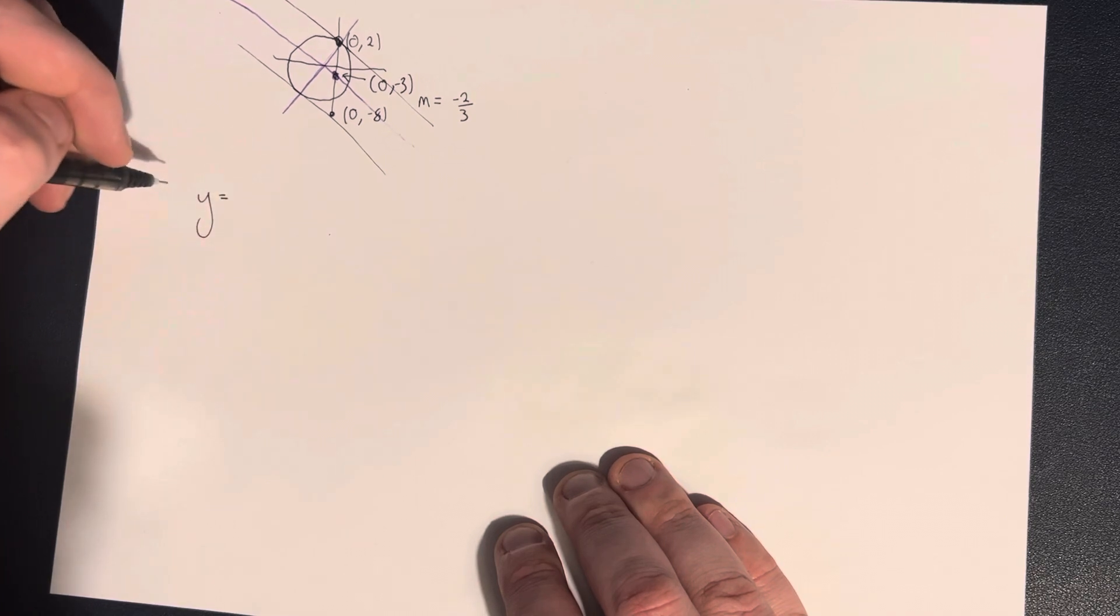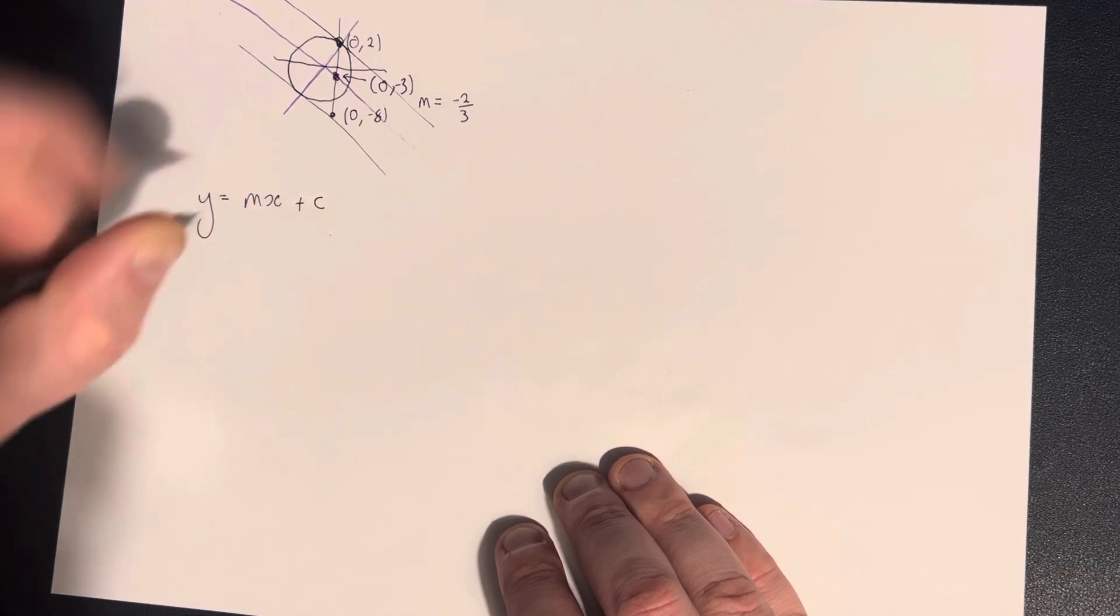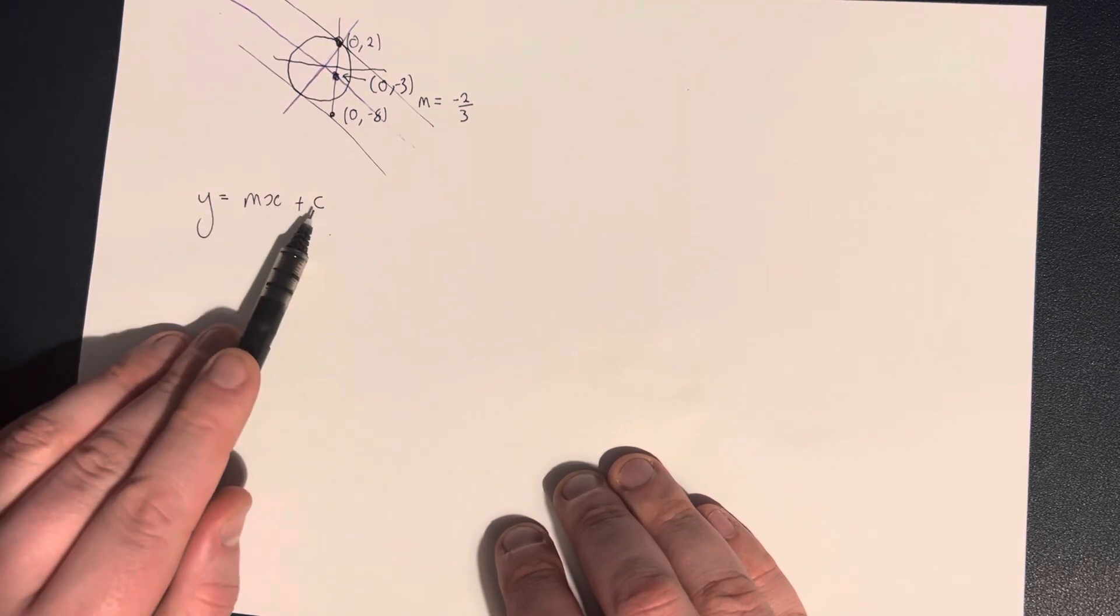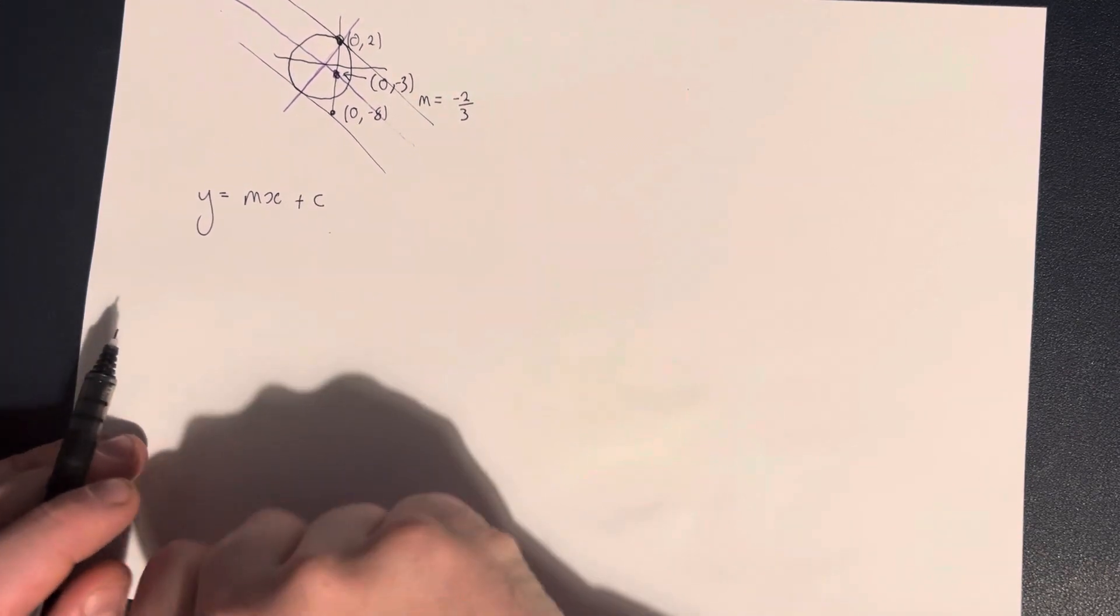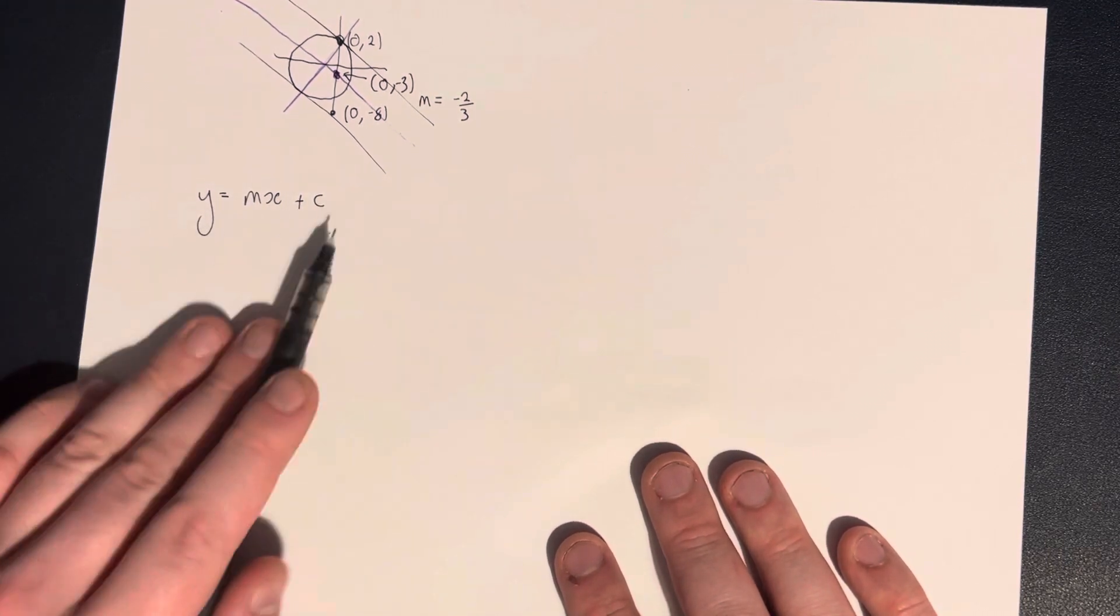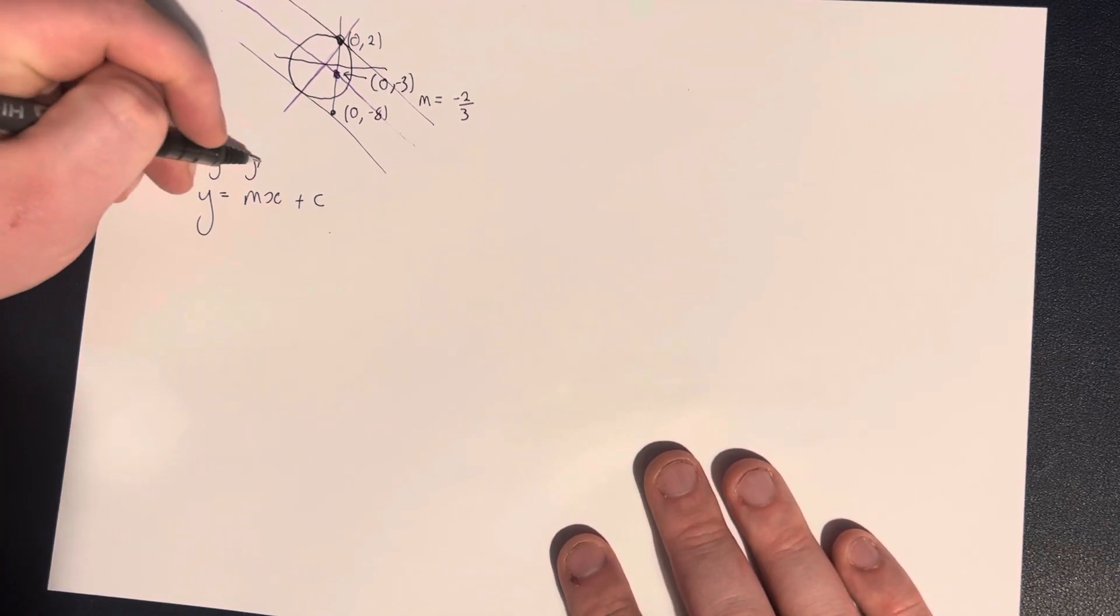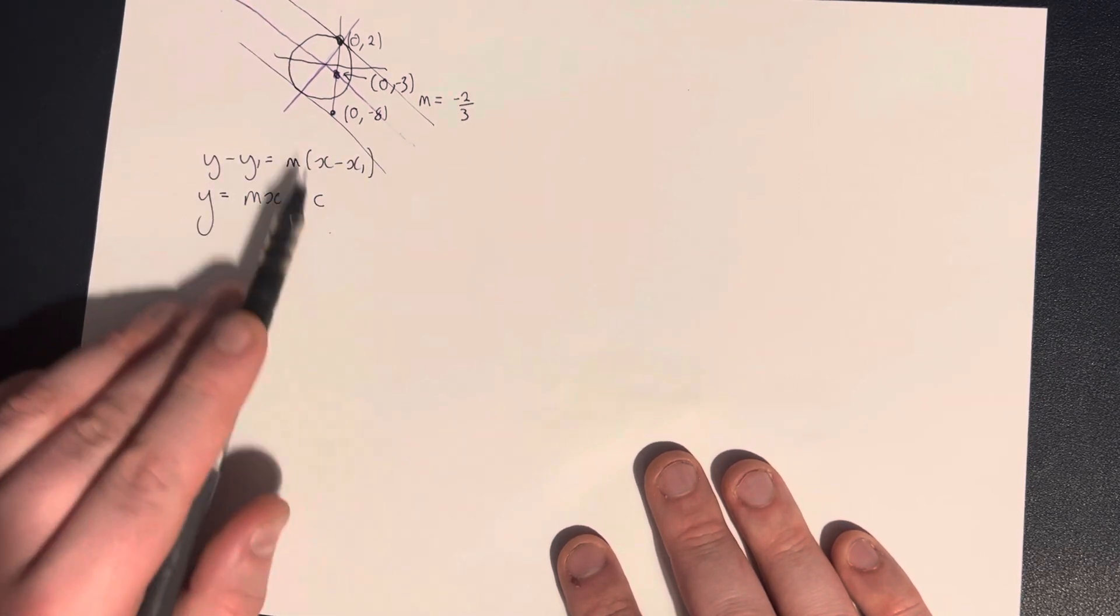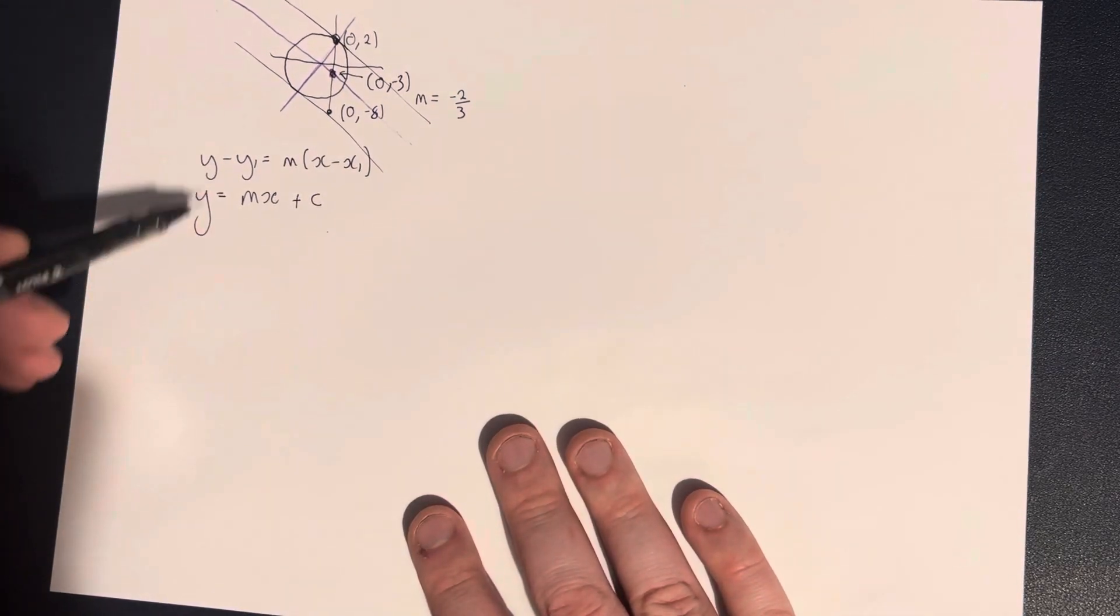We're going to go with y is equal to mx plus c. So that's the formula we're going to use. We can use this formula here because we have y-intercepts. These y-intercepts refer to this value of c. This is a very particular instance where we would find the equation of a line using this formula. We don't usually do that. Usually we use y minus y1 is equal to m into x minus x1. But in this instance, this one makes sense because we actually know the coordinates of the y-intercepts of the lines.